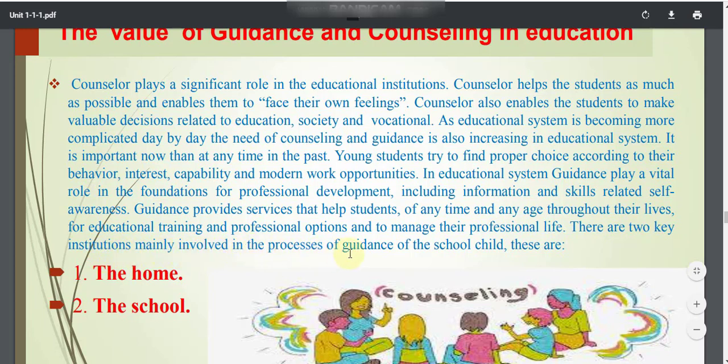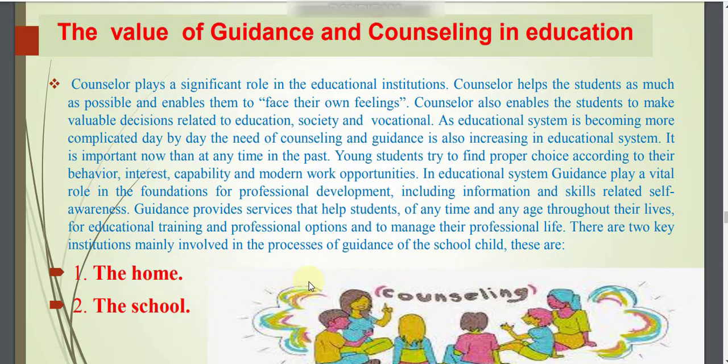There are two key institutions mainly involved in the process of guidance for the school child: the home and the school. Guidance and counseling help children to face issues in their physical development, intellectual and cognitive development, and emotional development.